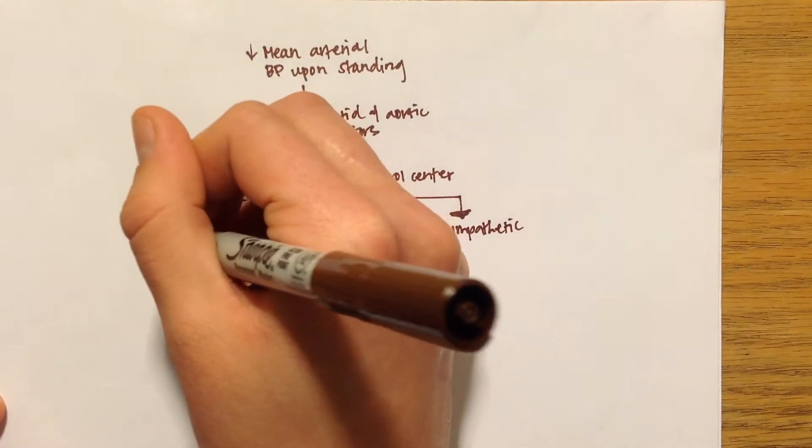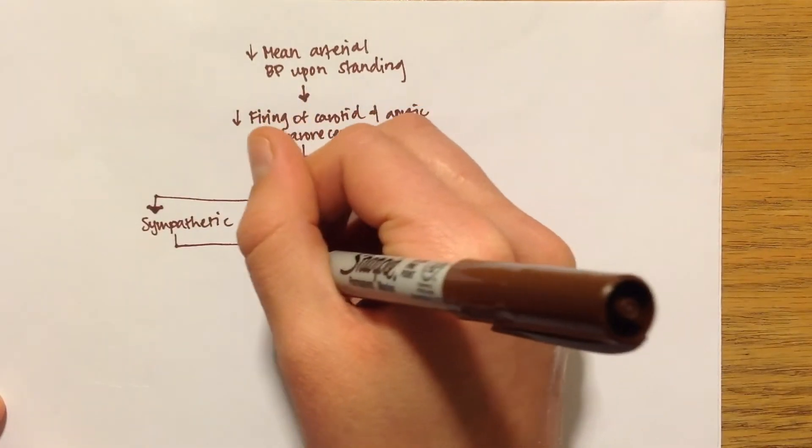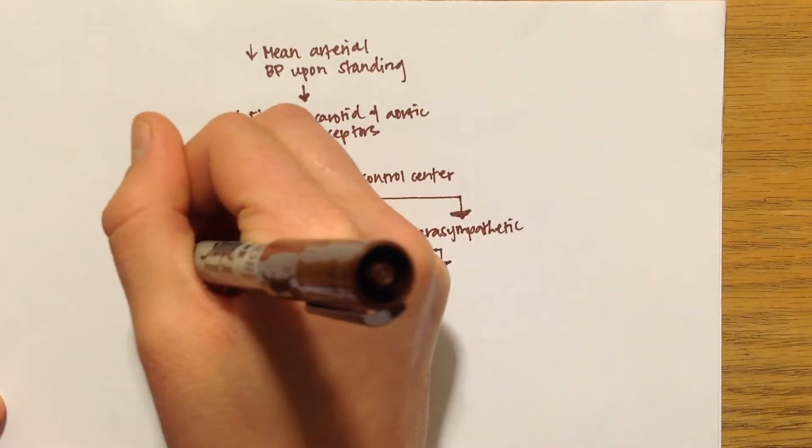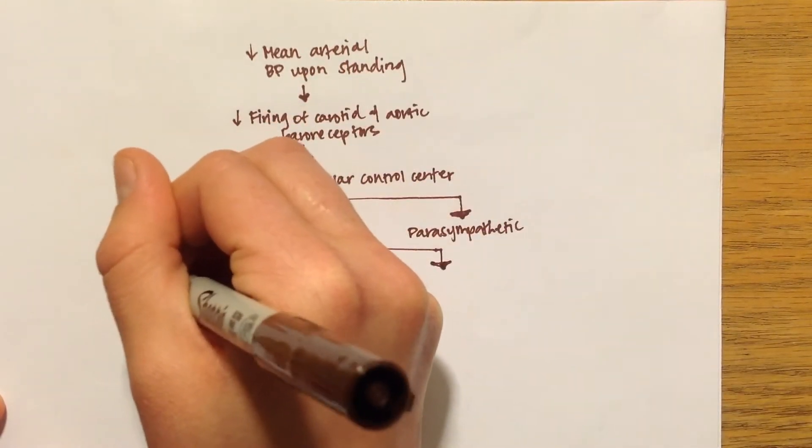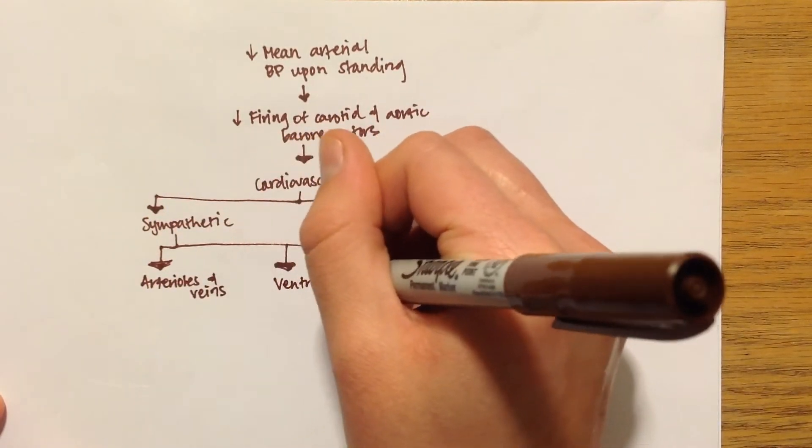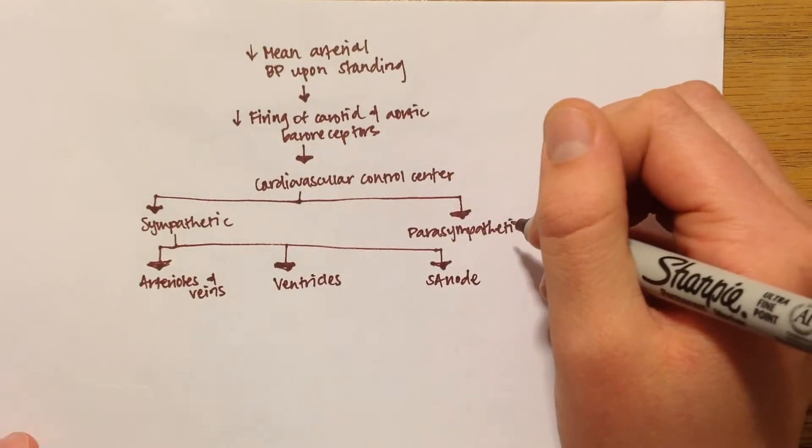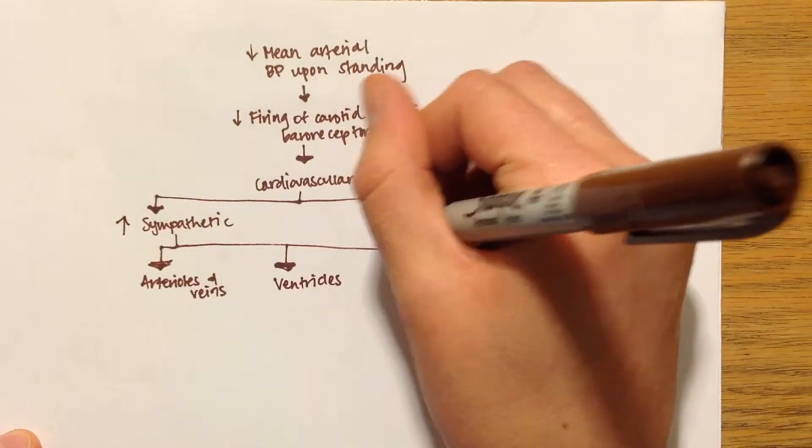The sympathetic nervous system would act on three different things. First of all, the arterioles directly and then the veins through the skeletal muscular pump. So not the veins directly. The ventricles and also the SA node. And the parasympathetic also innervates the SA node.